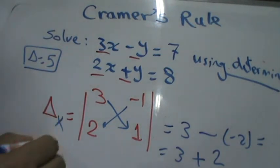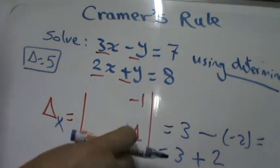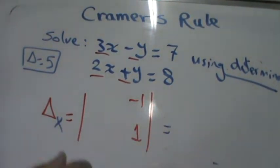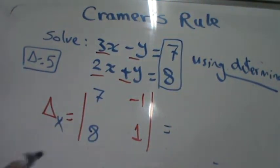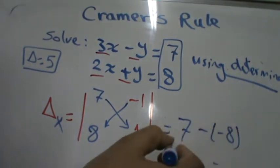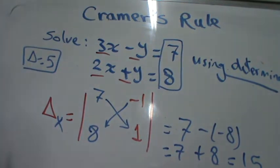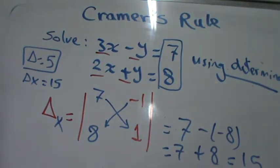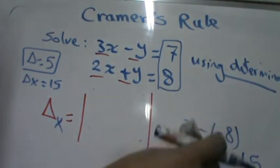Now find delta sub x. Remove the column of x from the delta determinant and replace it with the constants 7 and 8. Evaluate: 7 times 1 equals 7, minus negative 1 times 8 equals negative 8, so it becomes 7 plus 8, which equals 15. Delta sub x equals 15.